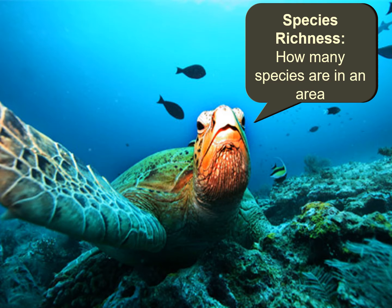Today in biology we are going to focus on species diversity. The first term you need to get comfortable with is species richness — basically how many species are in an area. Looking at this picture, you can see a green turtle, a Moorish idol, and another species of fish in the background, so you would say there are three different species. That is the species richness of the area.